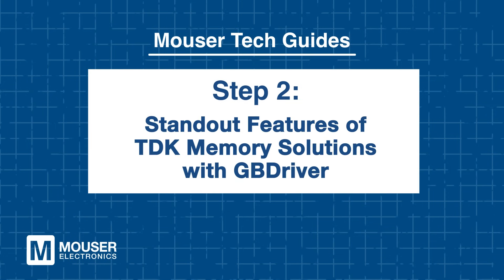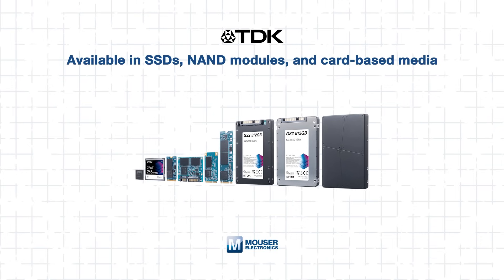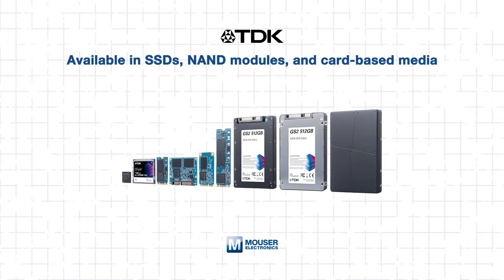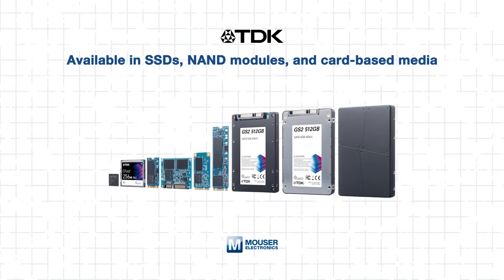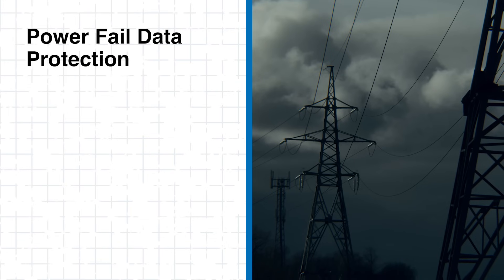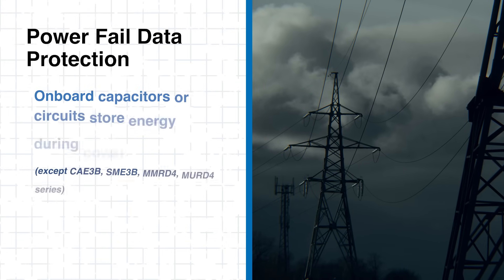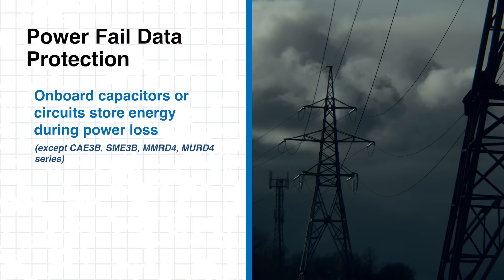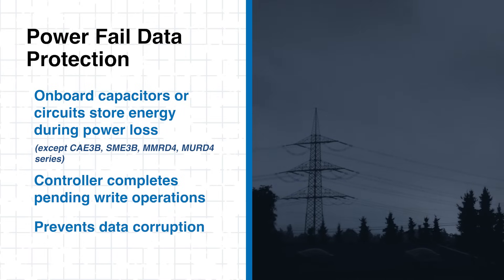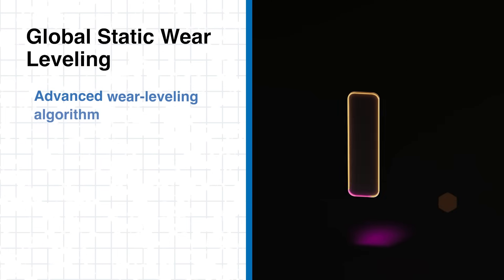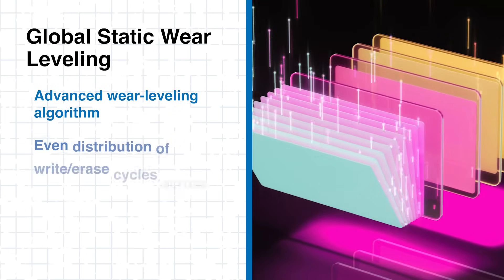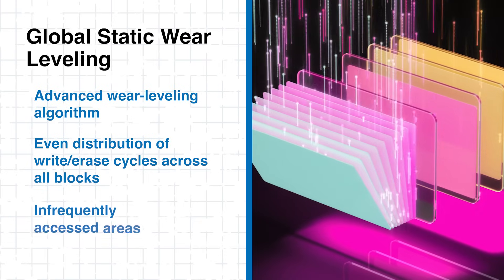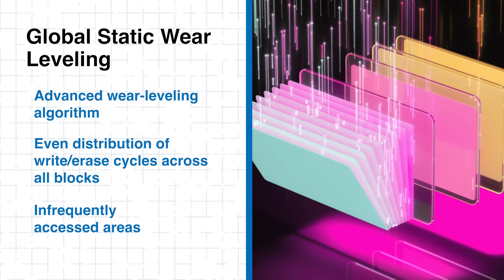Step 2: Standout features of TDK memory solutions with GB driver. TDK's memory solutions come packed with features that distinguish them in the industrial storage space. Available in SSDs, NAND modules, and card-based media, these storage devices are engineered with hardware and firmware level enhancements tailored for demanding environments. The feature I really love is power fail data protection — most models include onboard capacitors or circuits that store enough energy during sudden power loss to finish pending writes and protect your data from corruption. Another awesome feature is global static wear leveling, which helps ensure even distribution of write and erase cycles, including low-activity areas like file system metadata, extending the overall lifespan of the memory.